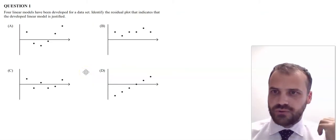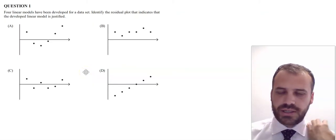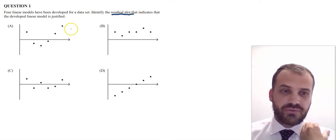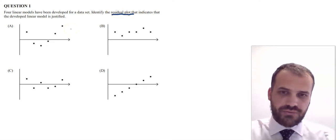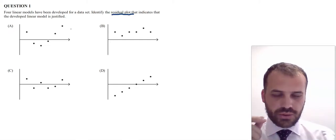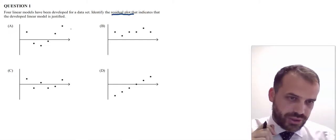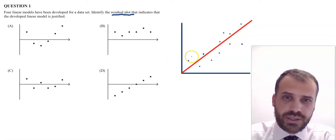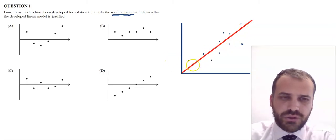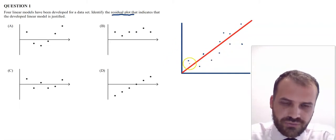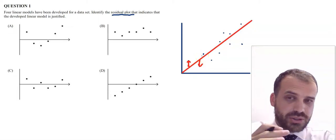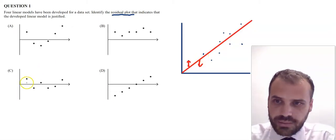Question one: four linear models have been developed for a data set. Identify the residual plot that indicates the developed linear model is justified. Let's talk about this residual plot idea. If you have some data points and you're creating a residual plot, what you're doing is finding out how far above or how far below each dot is, measuring those distances and plotting them.